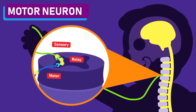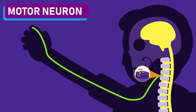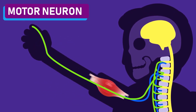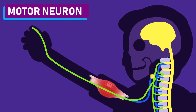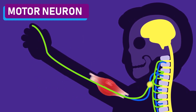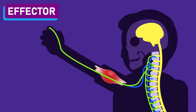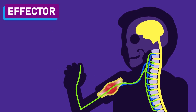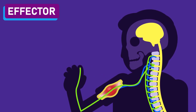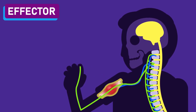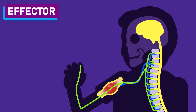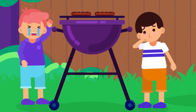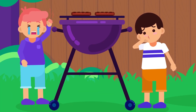4. Motor Neuron: carries the impulse away from the central nervous system towards the effector. 5. Effector: parts of the body that respond to the stimulus by carrying out the required action. This can be a muscle or a gland.